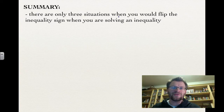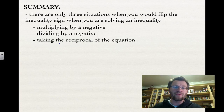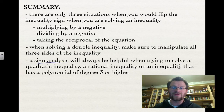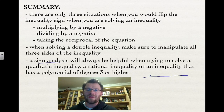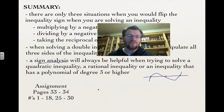In summary, there are only three situations where you flip the inequality sign: multiplying by a negative, dividing by a negative, or taking the reciprocal of both sides. When solving a double inequality, manipulate all three sides. A sign analysis is always helpful for quadratic, rational, or higher-degree polynomial inequalities — pick test points between the key reference points and check their sign. Your assignment is on pages 33 to 34, numbers 1 to 18 or 25 to 30. Good luck, and we'll see you in class.